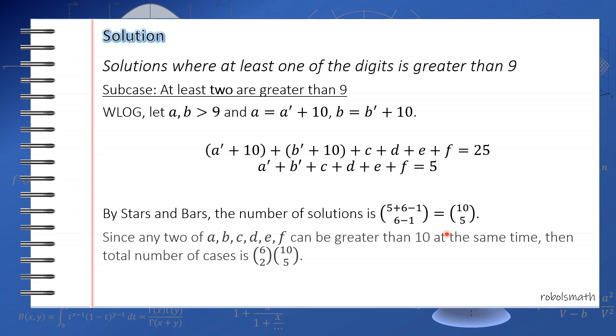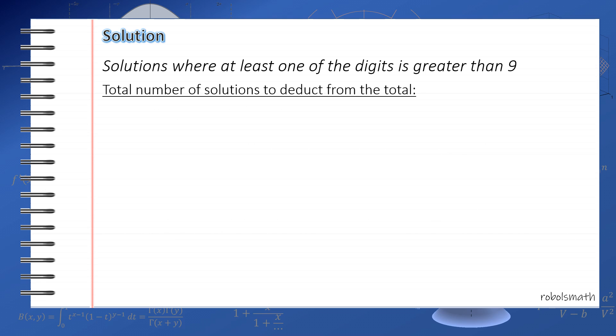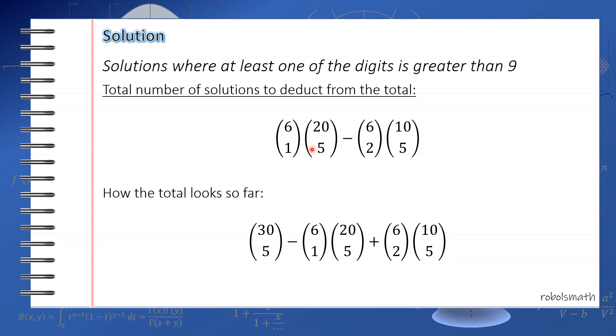Again, since any two of the six variables can be greater than 10, then the total number of cases for this subcase is 6 taken 2 times 10 taken 5. Earlier it was 6 taken 1, now it's 6 taken 2 because two variables are the ones we're accounting for. Therefore, the total number of solutions from the total so far is 6 taken 1 times 20 taken 5 minus 6 taken 2 times 10 taken 5. So, the total looks this way so far. This is our total from earlier without any constraints. Now we're using the principle of inclusion and exclusion.